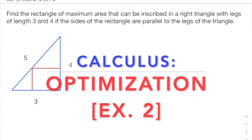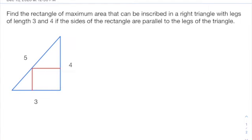Hey everybody, Mr. Murray here, Mr. Murray's Math Land, taking a look at another optimization problem here. And in this problem, we are trying to find the rectangle of maximum area that can be inscribed in a right triangle with legs of length 3 and 4 if the sides of the rectangle are parallel to the legs of the triangle. So not twisting the rectangle sideways or anything.